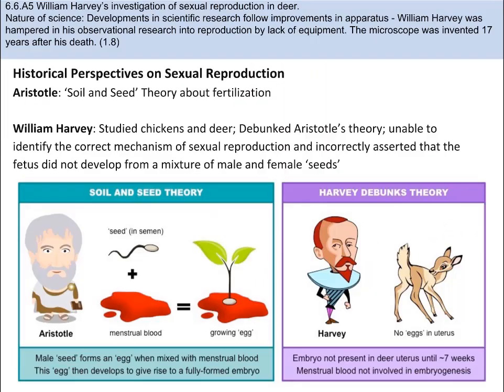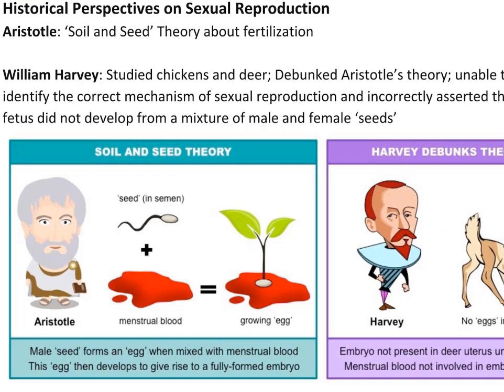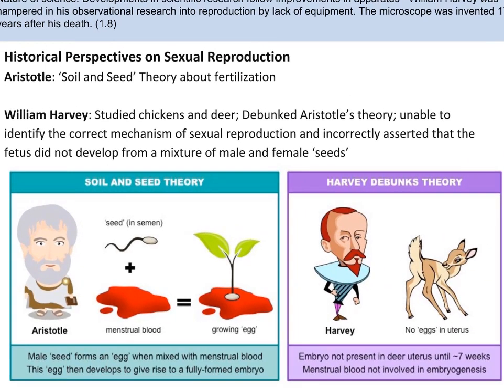Let's shift from sleep and talk about the historical perspective on how animals reproduce sexually. One of the earliest theories was put forward by Aristotle. According to his theory, which he called soil and seed, a male produced a seed which formed into an egg when it was mixed with the menstrual blood. The seed plus the menstrual blood would then develop into a fetus inside the mother, according to the information contained in the male seed alone. This theory was popular for many years until William Harvey — the same William Harvey we've learned about before — came along and tested Aristotle's theory.